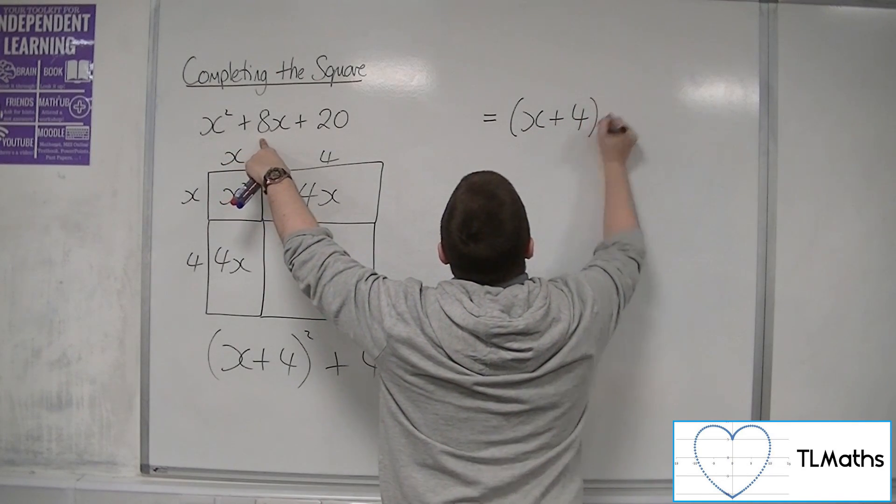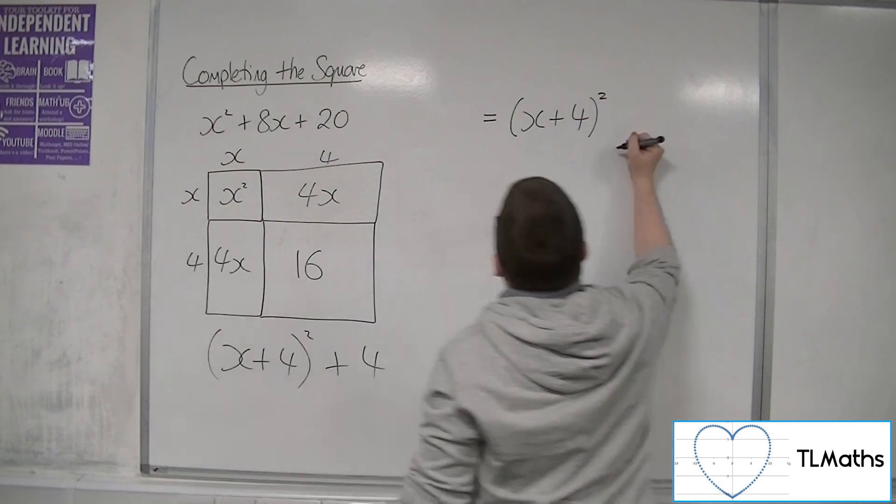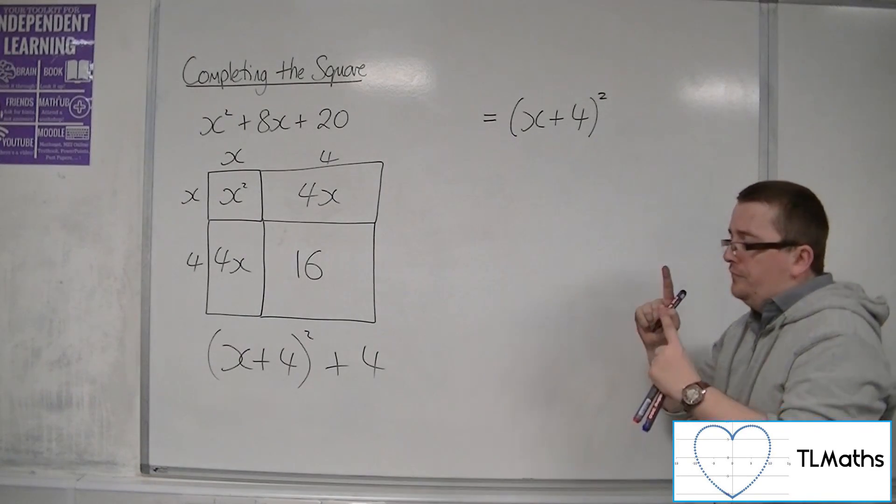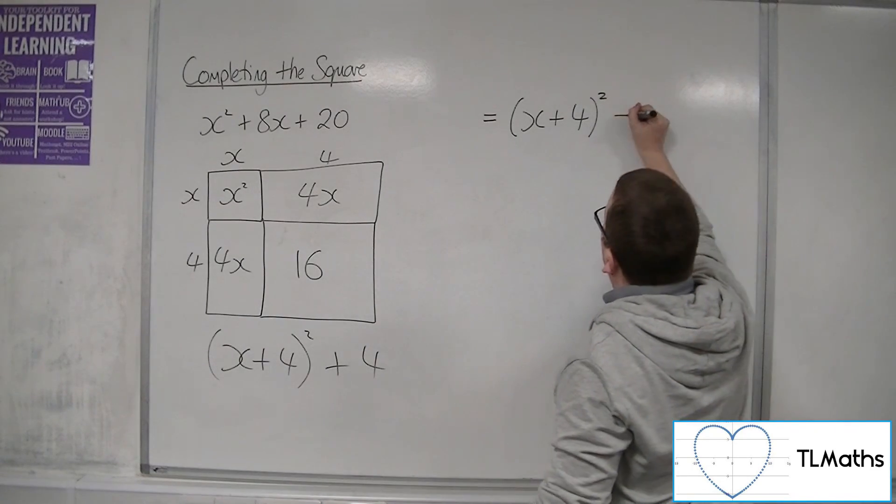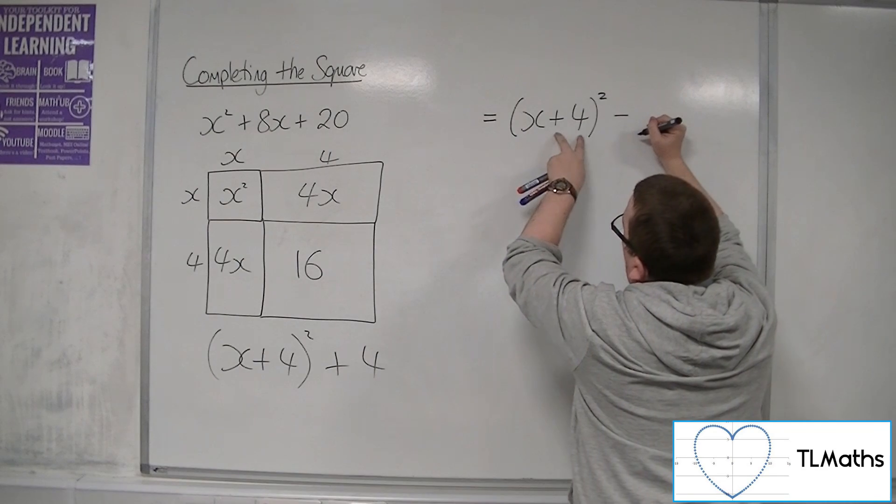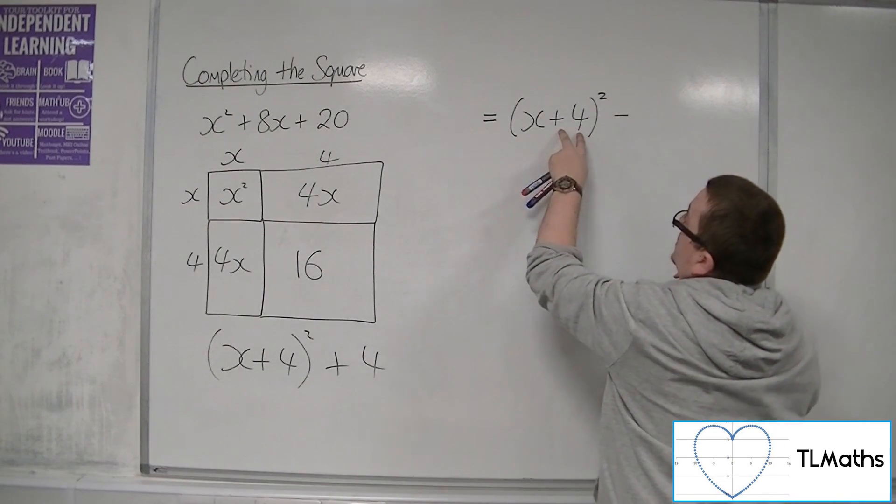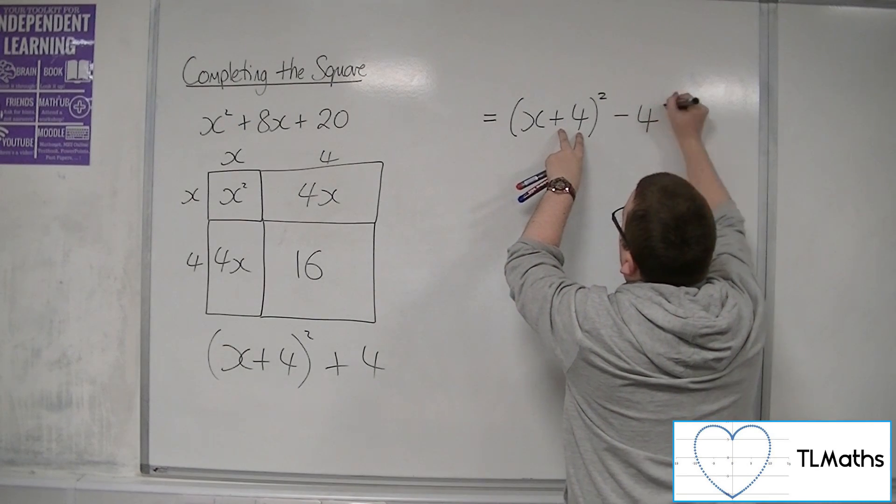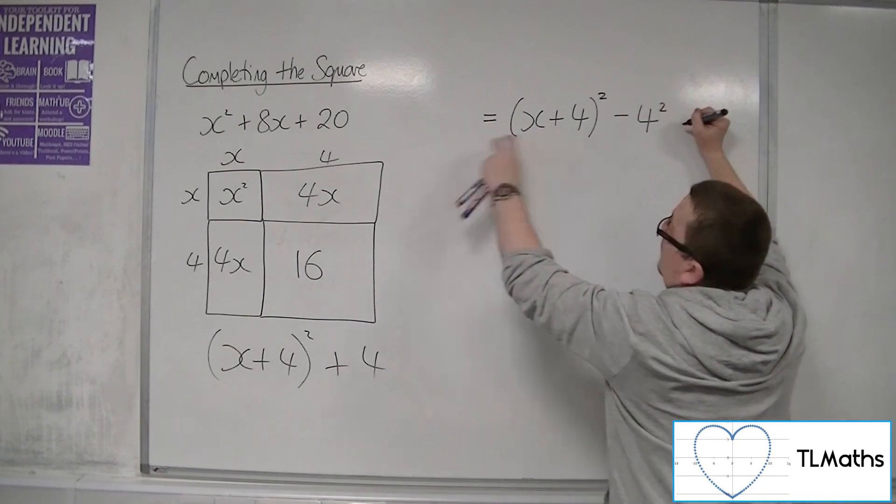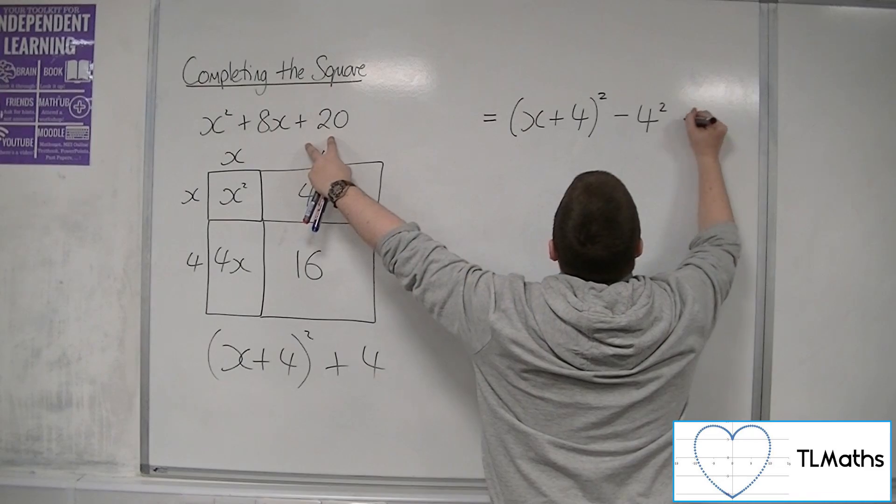And we're going to square that. And then we take away whatever this number is squared. It's always take away, and it's always taking away this number squared. So take away 4 squared, and we've got this plus 20 left over.